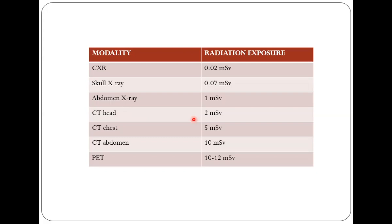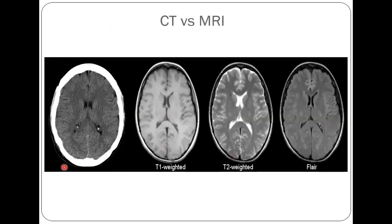Now, CT versus MRI — how do we differentiate them? First, we look at the bone. Bone is always white on a CT scan, but on an MRI, bone appears black — hypointense. In the periphery, the white we see is actually scalp fat; fat on MRI is hyperintense. So: bone white = CT; bone black = MRI. This is a non-contrast CT scan, because in a contrast CT, the blood vessels would appear brighter white.